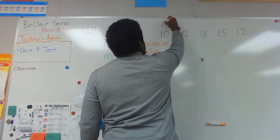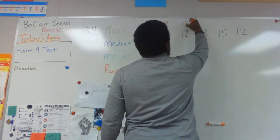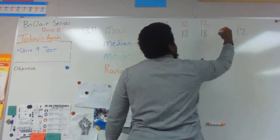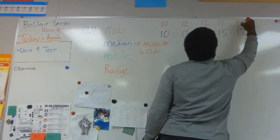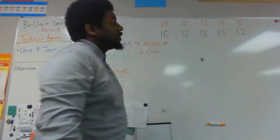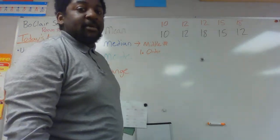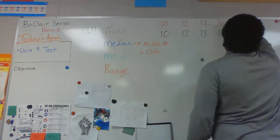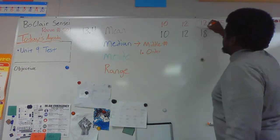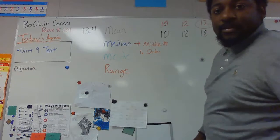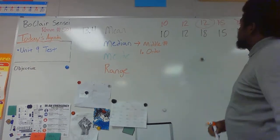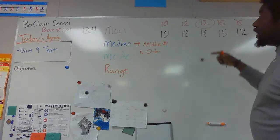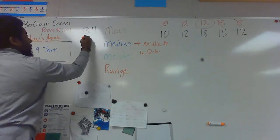So I see 10 is my smallest, then 12, but then I have 12 again, then 15, then 18. So the number that's in the middle, let's see, I have a low number, two high numbers, only thing I have in the middle is 12. Since 12 is the number that I have in the middle, 12 is my median, or my middle number.